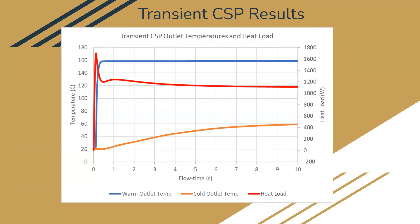The CSP results look quite similar to the simplified baseline model. The red line is the heat load — you can see it spikes very quickly and then reaches steady state, while the cold outlet temperature rises more slowly and reaches its steady state around eight or nine seconds. The warm outlet temperature reaches its steady state extremely quickly.